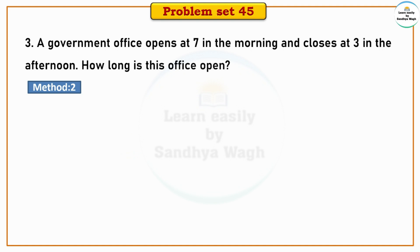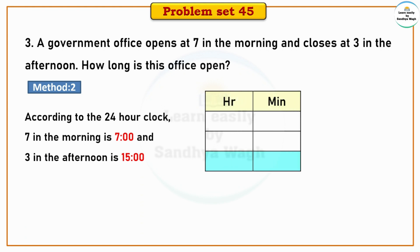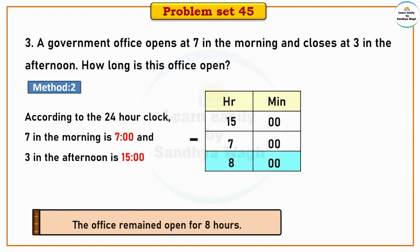Second method: We convert from the 12-hour clock to the 24-hour clock. According to the 24-hour clock, 7 in the morning is 7, and 3 in the afternoon is 15. Then we subtract: 15 minus 7 equals 8. So our final answer is the office remained open for 8 hours.